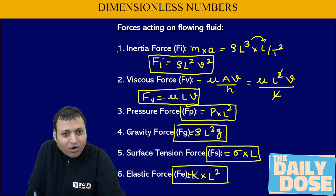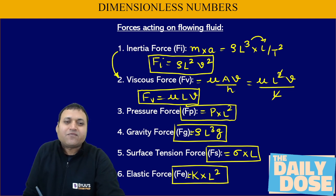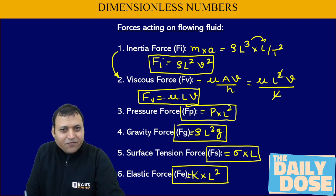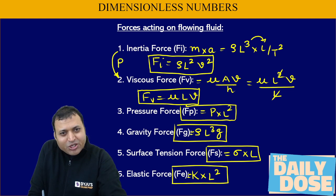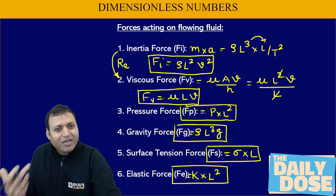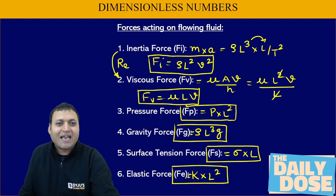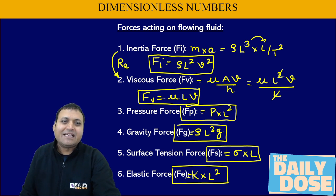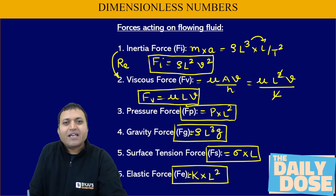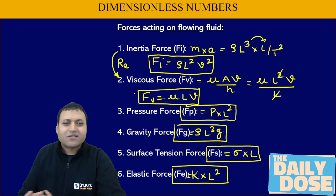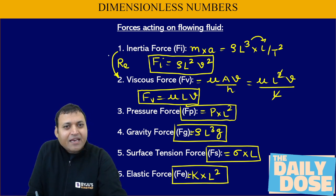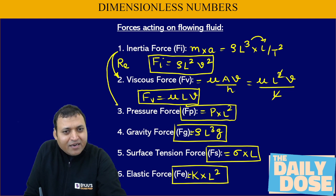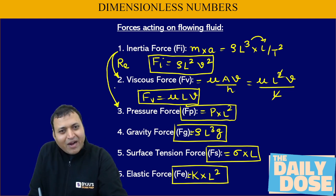If we take the ratio of inertia force to viscous force, we get the Reynolds number — the ratio of inertia force by viscous force. That is not difficult to memorize. Then, if we keep inertia force in the numerator and divide by pressure force, we get the Euler number.